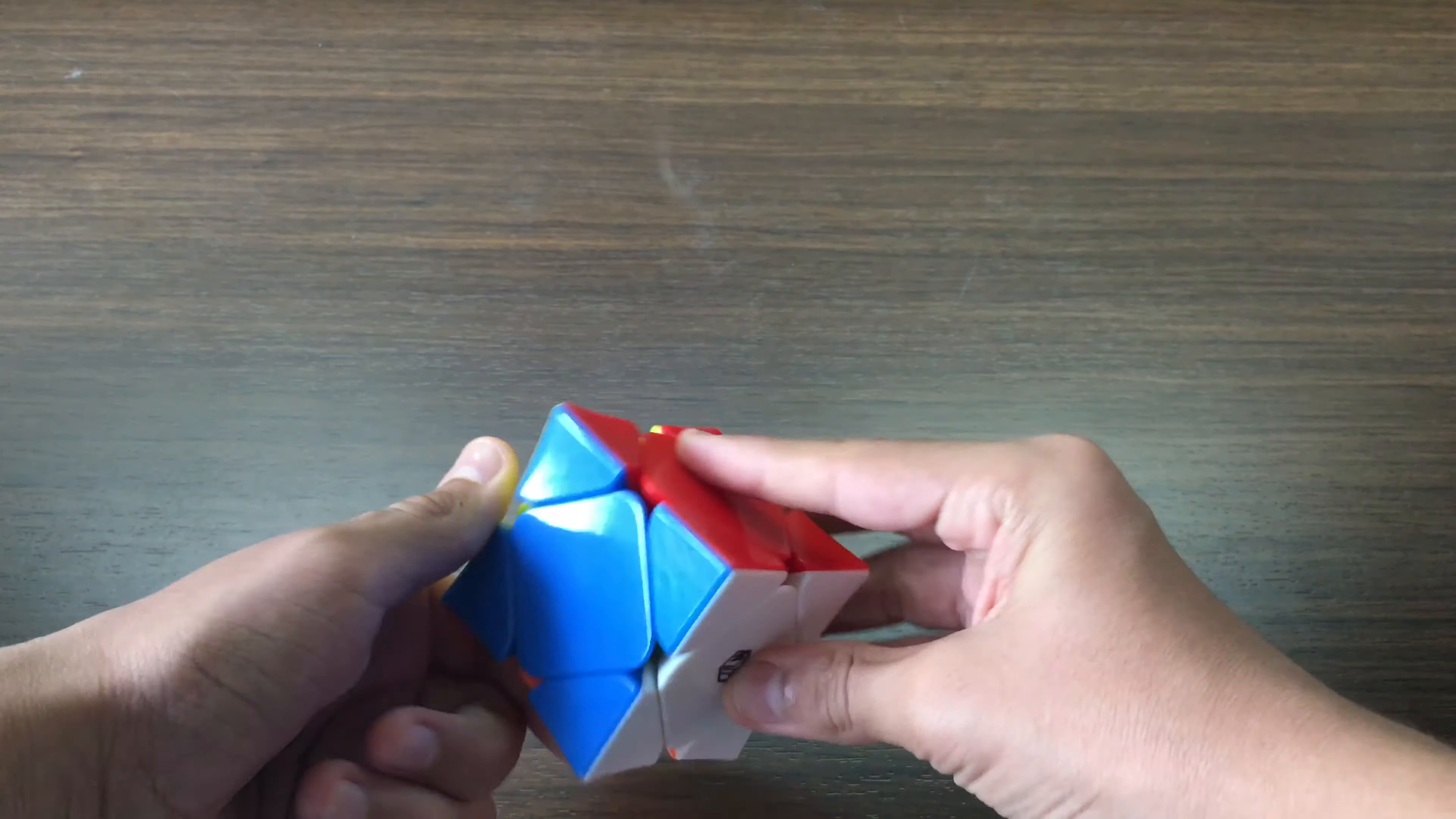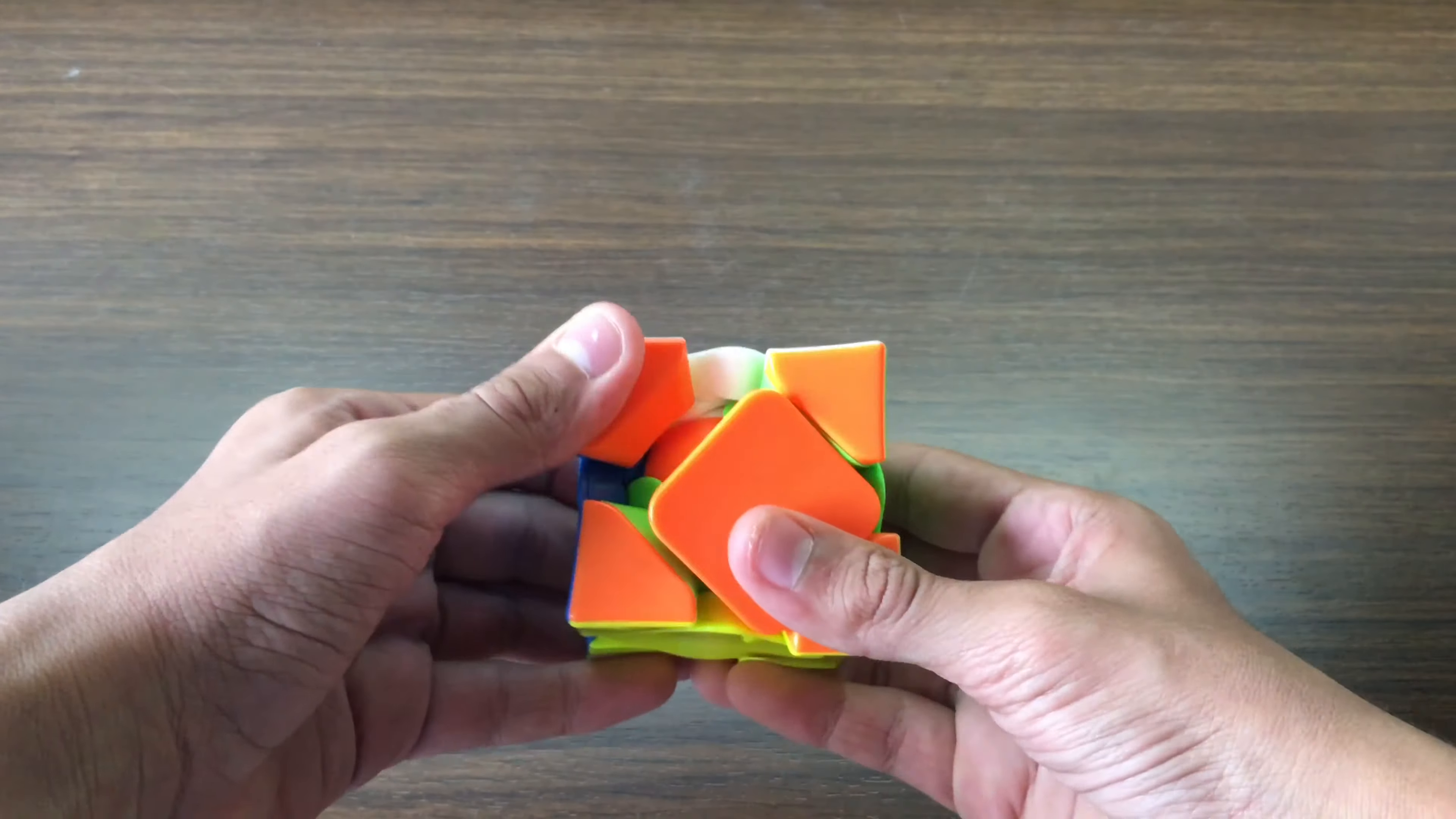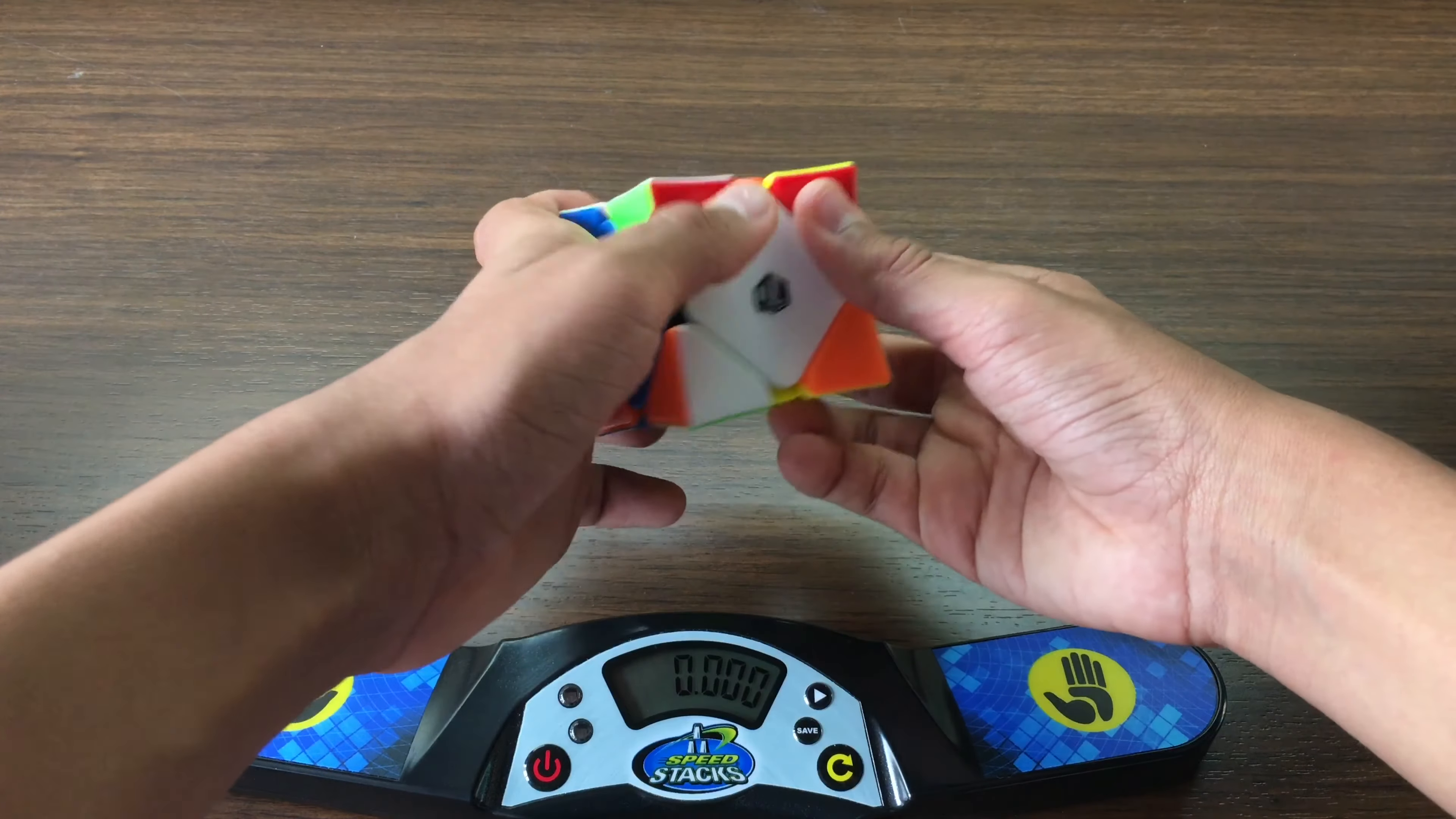Luckily it was a sub-4, which I was really happy with, and it's still my PB up to date. So this was a very good solve for me. So let's go ahead and do the scramble here.